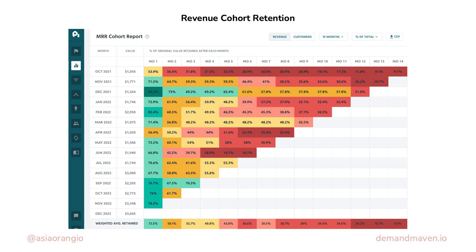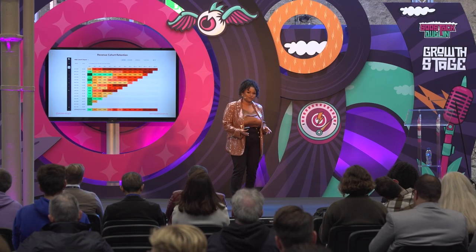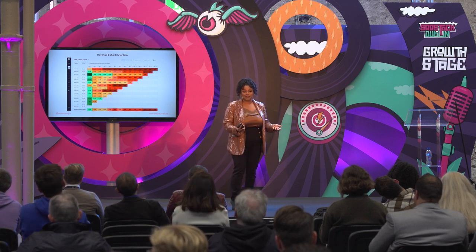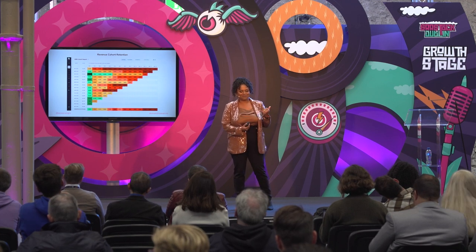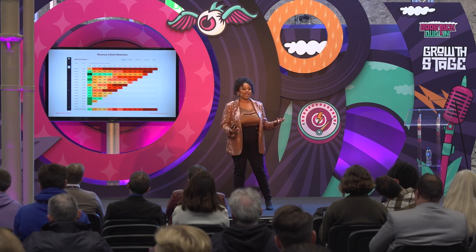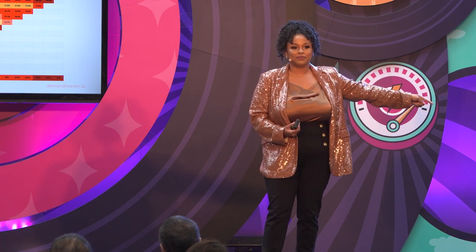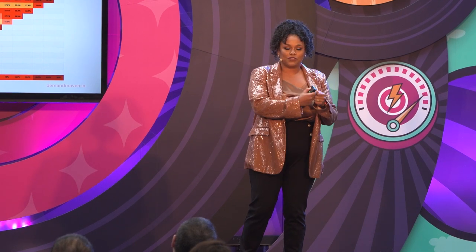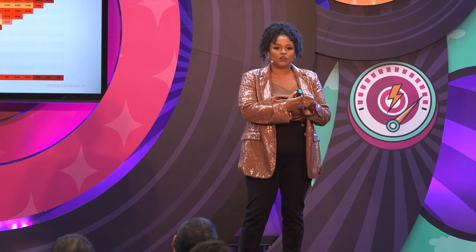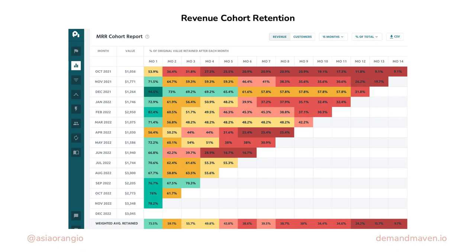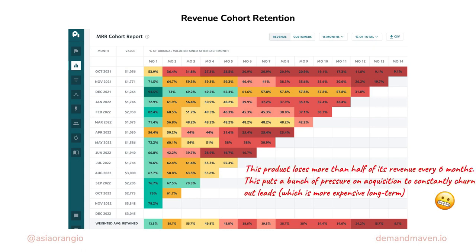Now back to the revenue cohort retention chart — number three. If you have Profitwell, ChartMogul, or Baremetrics, you have this chart for free right now. What this chart tells us is, on average, how much revenue do we retain month over month from the month that revenue was generated. For example, if you sign up in October 2022, those dollars get counted for that month, and the tool tracks how long those dollars stick around. You can have quote 'healthy churn' of five percent and still have a graph that looks really bad.